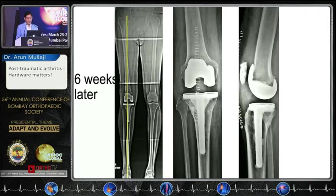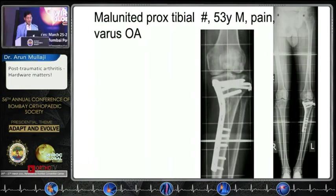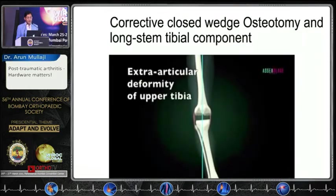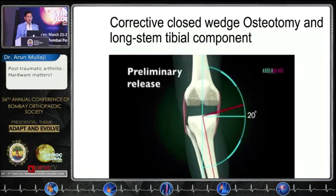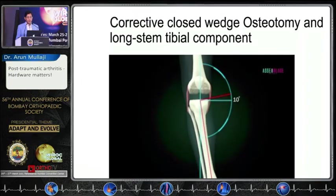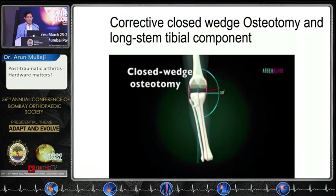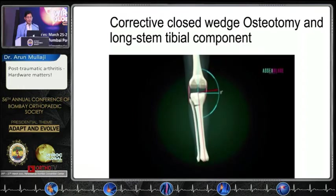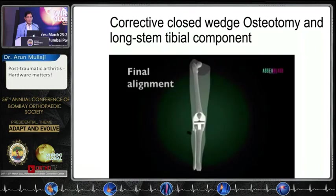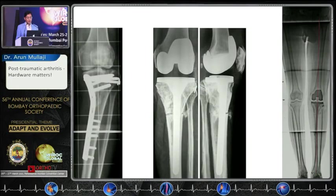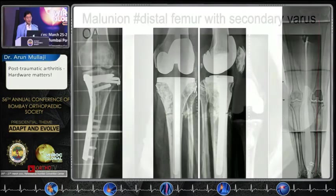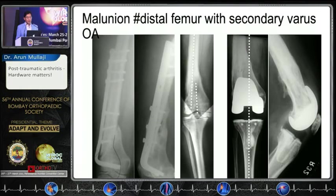This is a malunited proximal tibial fracture in a middle-aged patient with varus osteoarthritis. Here we performed a closing wedge osteotomy: first a medial release to bring the deformity from 20 to 10 degrees, then remove a wedge of bone from the apex of the deformity. A closing wedge osteotomy followed by a long stem was used to correct the alignment.